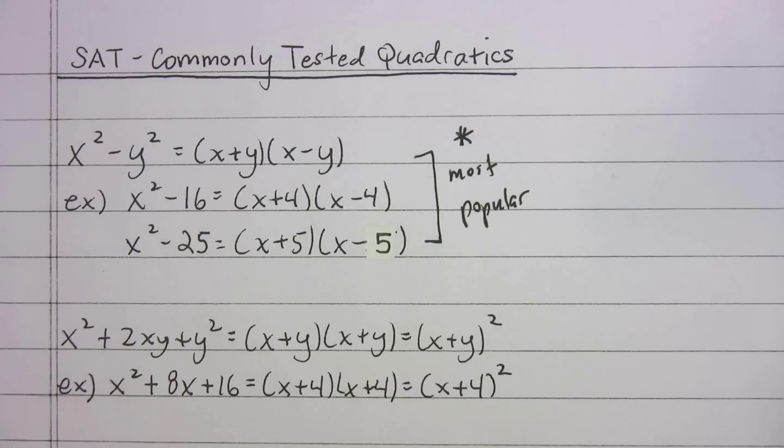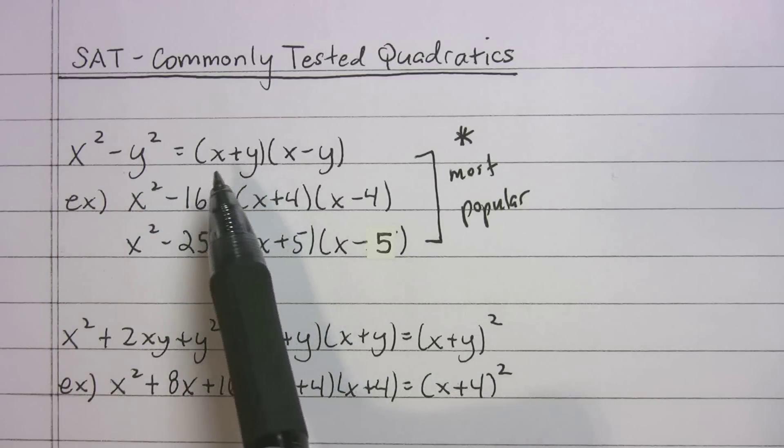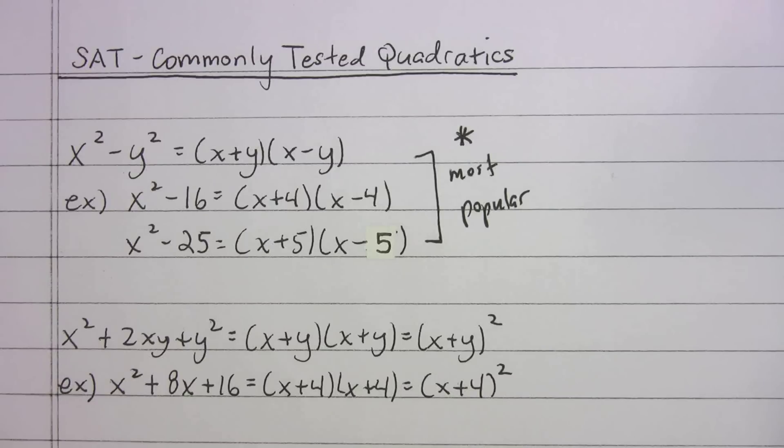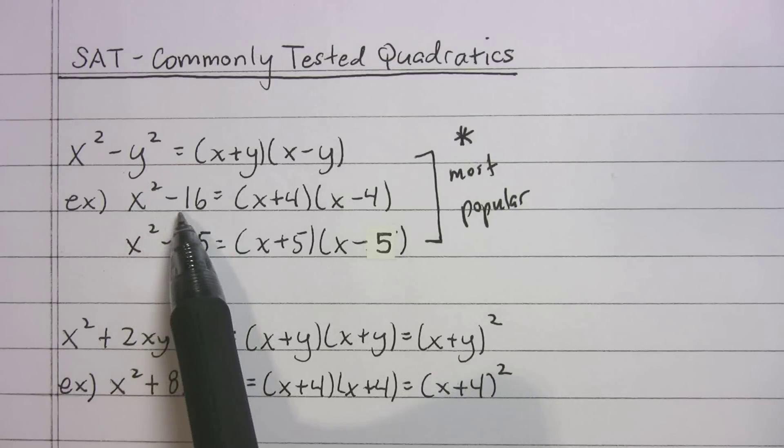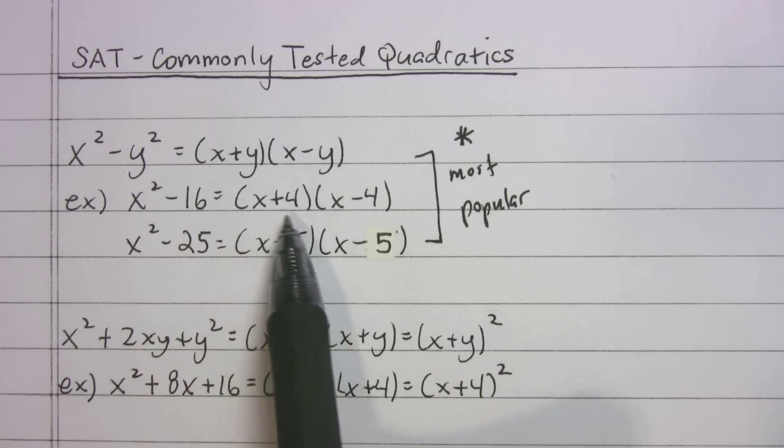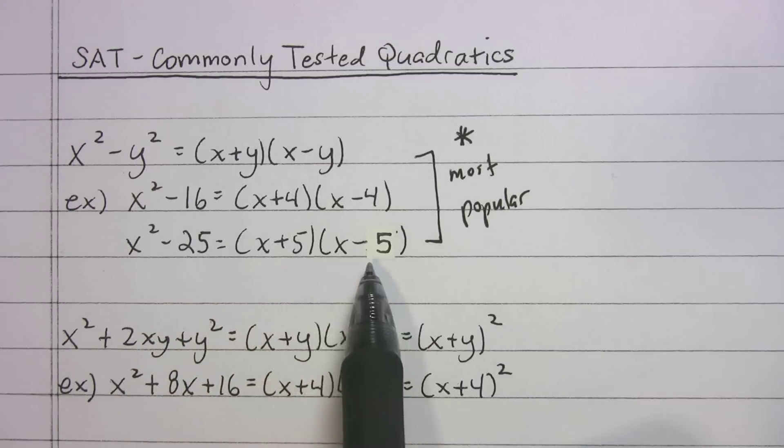The first one here is probably the one I've seen the most, the difference of two squares. You should know that x squared minus y squared breaks down into x plus y times x minus y. If that seems a little foreign to you, it's probably more familiar in school. If you had x squared minus 16, you should know that's x plus 4 times x minus 4. x squared minus 25, x plus 5 times x minus 5.